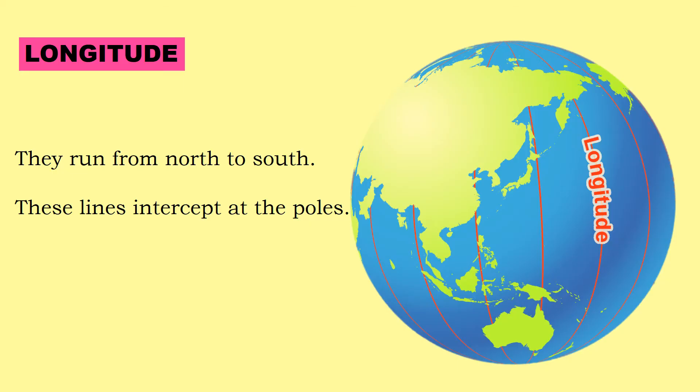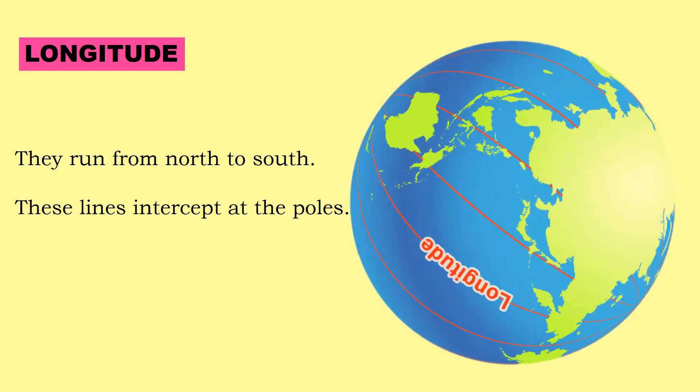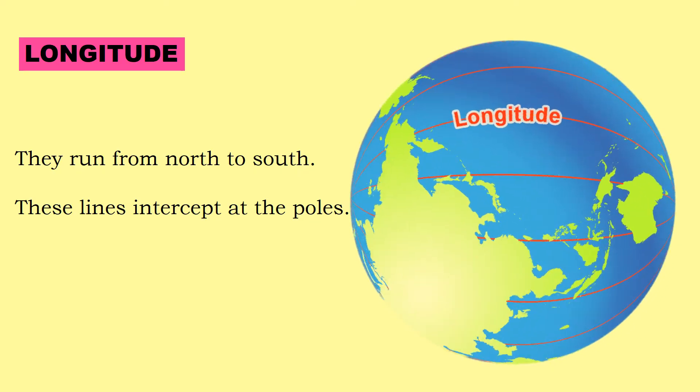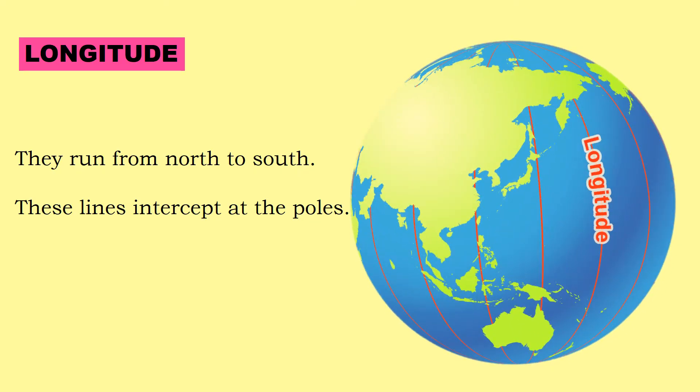Lines of longitude. These lines are known as meridians. They run north to south. Lines of longitude are not parallel. Instead, they intercept at the North and South Poles.